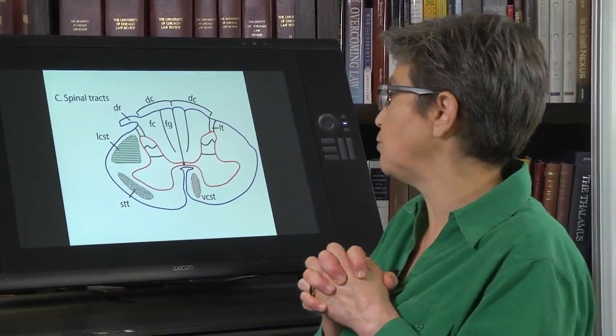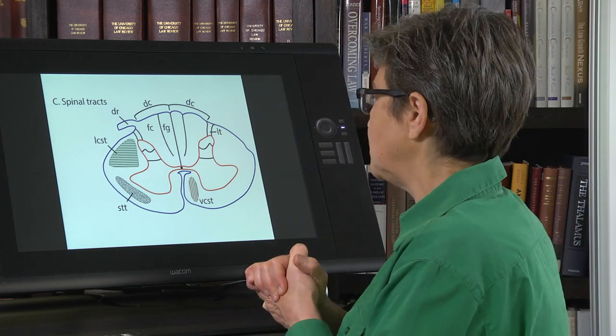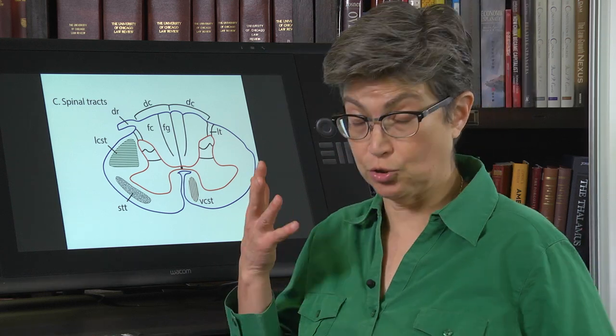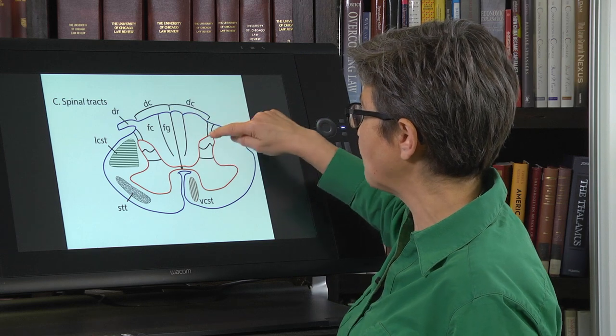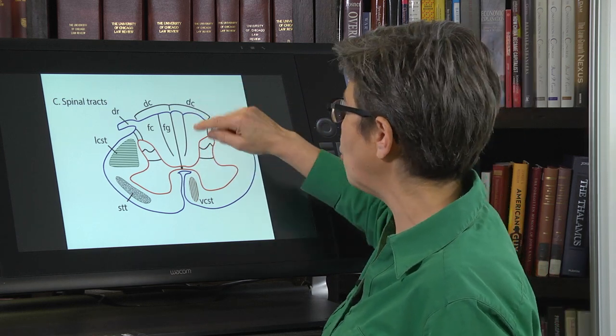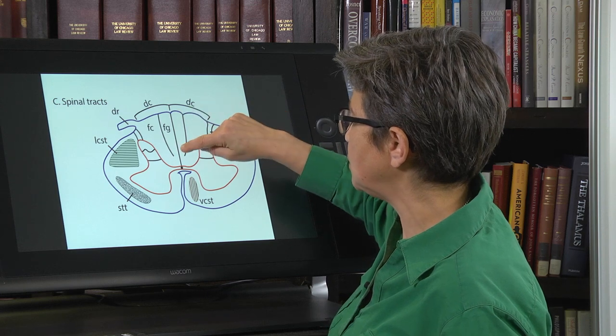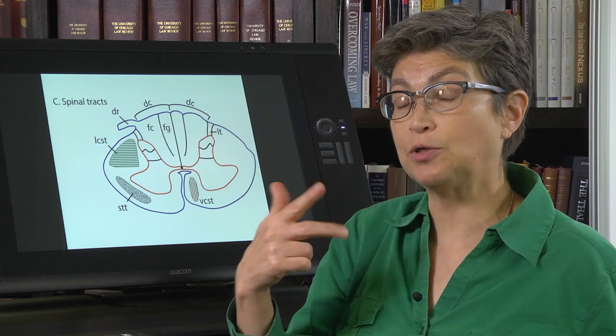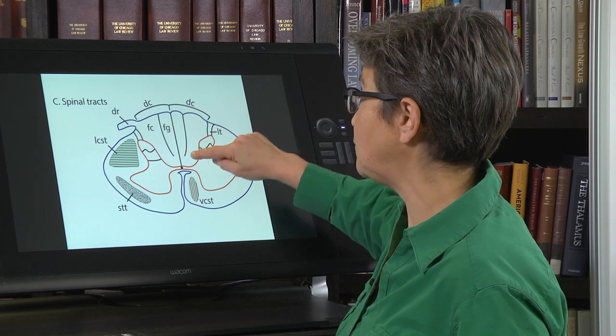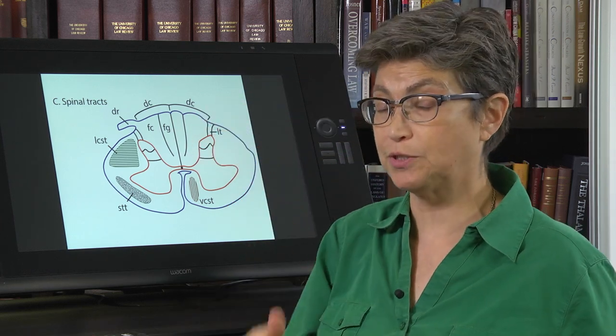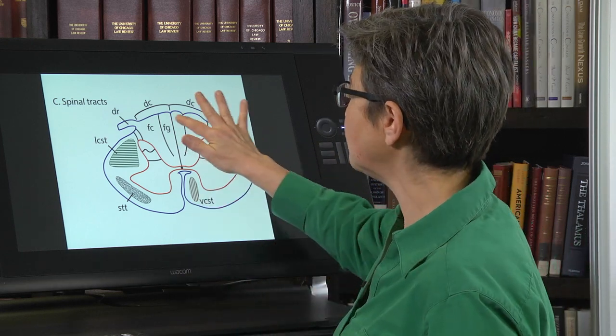So let's make sure that we understand where everything is traveling. Remember, we have our three big pathways. And so the first one that we're going to talk about is the dorsal column medial lemniscus pathway. The dorsal columns are everything here. And this would be a section from cervical cord. It has the fasciculus gracilis, which carries information about light touch, vibration, proprioception from the ipsilateral leg and lower trunk. Whereas the fasciculus cuneatus is carrying light touch, proprioception, vibration information from the ipsilateral arm and upper trunk. Together, these make up the dorsal columns.